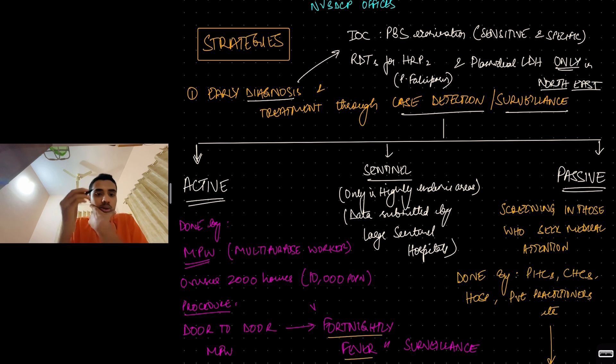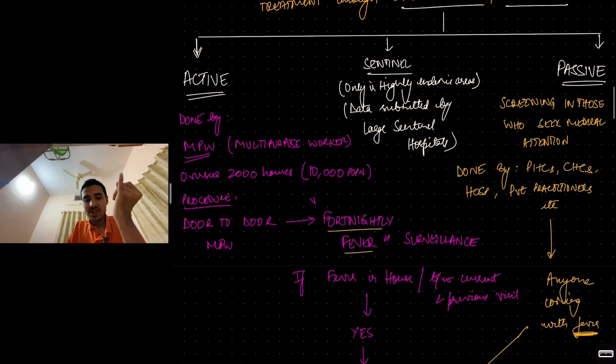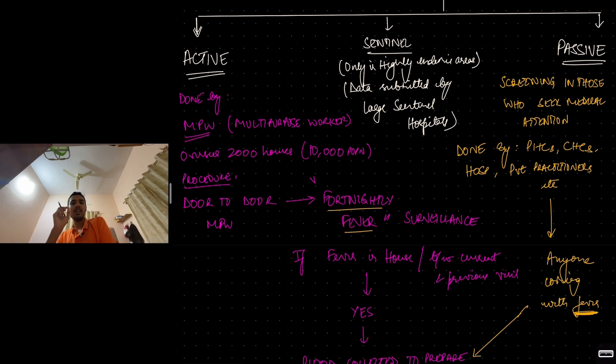But how do we surveil for cases? How do we identify cases? There are three methods. Active surveillance, sentinel surveillance, and passive surveillance. Sentinel surveillance is only done in highly endemic areas. Basically, these large sentinel hospitals, they'll get a lot of malaria patients. So they'll submit their data to the IDSP project. That is sentinel surveillance. Not that important.